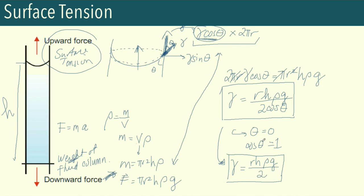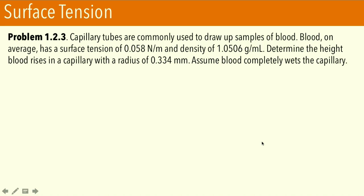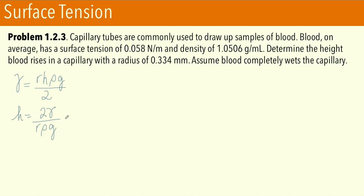Let's apply the surface tension equation to a problem involving capillary tubes drawing up blood. We want to determine the height blood rises in a capillary given its radius. Using γ = r·h·ρ·g / 2 and assuming blood completely wets the capillary (θ = 0), we rearrange to solve for h: h = 2γ/(r·ρ·g). This looks like a plug-and-play situation but we must be careful with units.